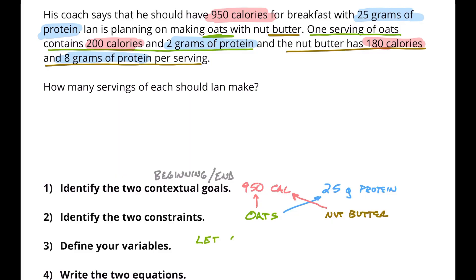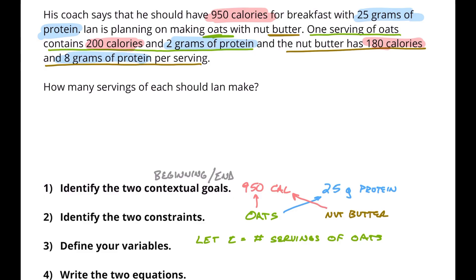So let's let T equal the number of servings of oats. Typically when you're choosing variables, I use the first letter of the word, but since oats starts with O and it looks a lot like a zero, I'm choosing T. And then for the nut butter, let's let B equal the number of servings of nut butter.